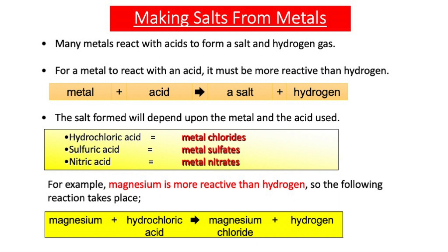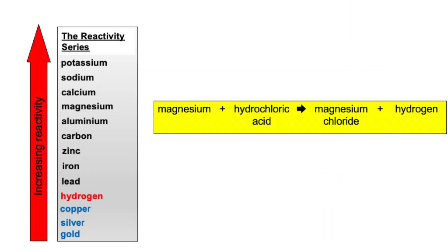If the metal is more reactive than hydrogen, a chemical reaction will take place and the hydrogen is displaced from the acid by the metal. The salt formed depends on the metal and the acid used — hydrochloric acid gives a metal chloride, sulfuric acid gives a metal sulfate, and nitric acid gives a metal nitrate. For example, magnesium plus hydrochloric acid makes magnesium chloride and hydrogen gas, because magnesium is more reactive than hydrogen as shown in the reactivity series.